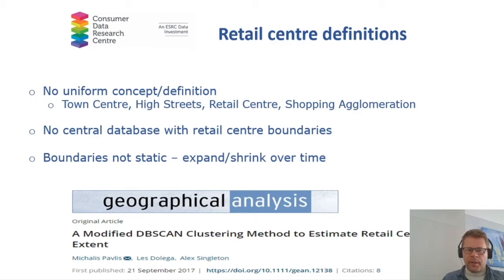Another reason they have to be estimated, perhaps over and over again, is that retail boundaries are not static — they are allowed to expand and shrink over time. For example, here in Liverpool, back in 2009, a large shopping centre called Liverpool One was added to the existing retail boundaries, expanding them quite significantly. Conversely, retail centres can shrink where different retail units or entire streets are converted into different uses, such as residential.